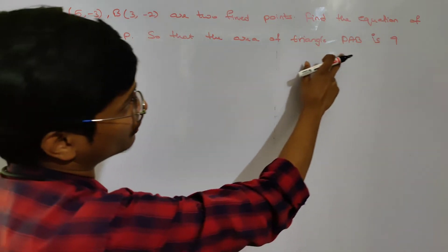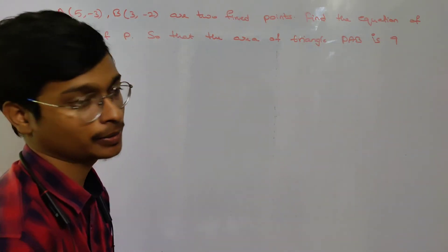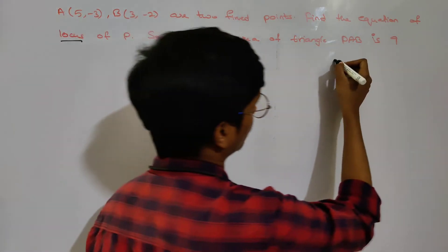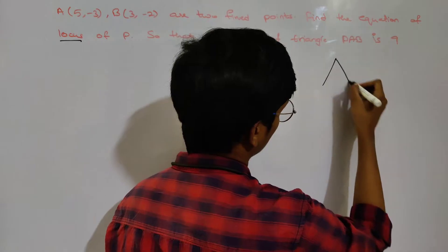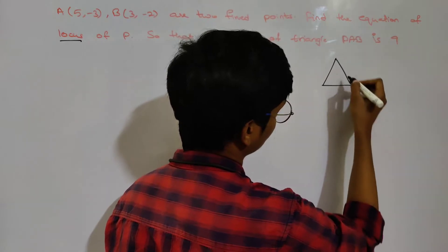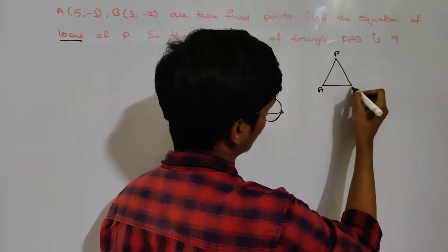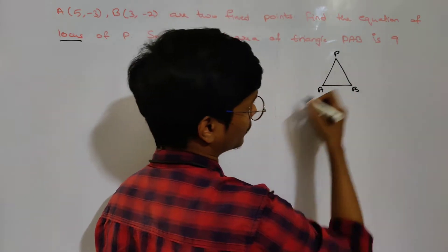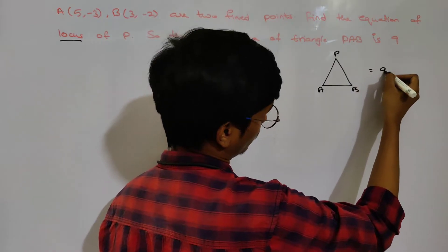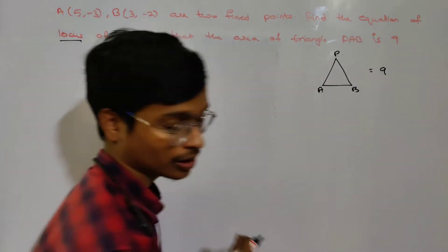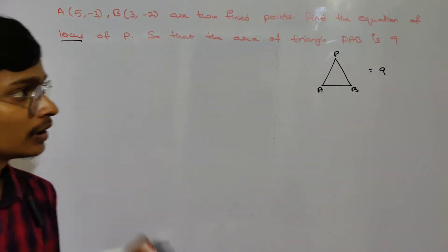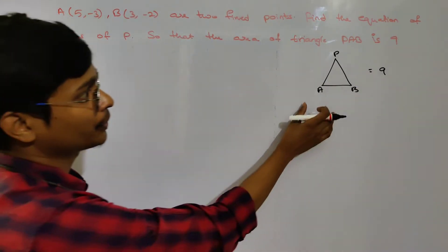So that the area of triangle P, A, B equals 9. That is the given condition. We have point A and point B.